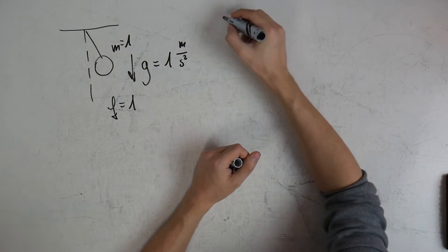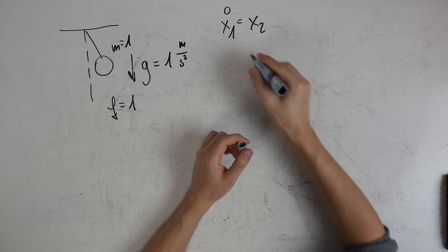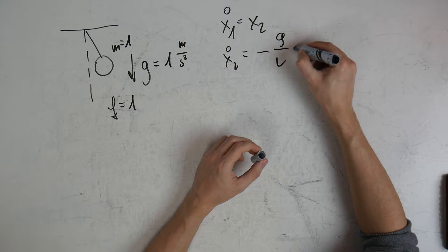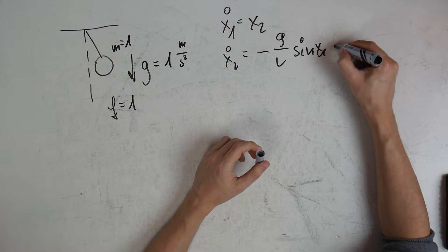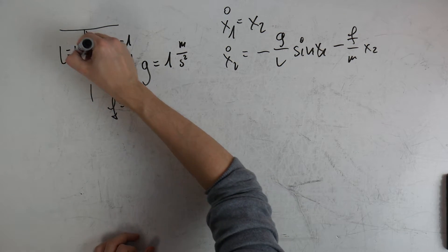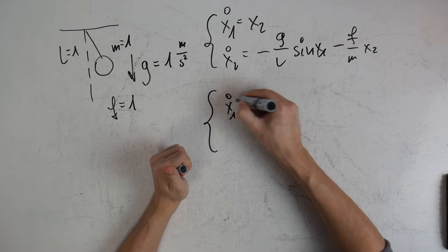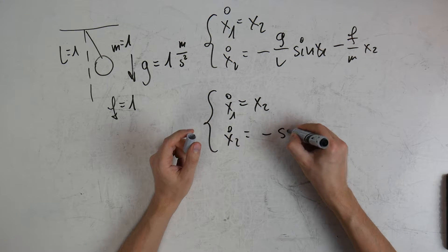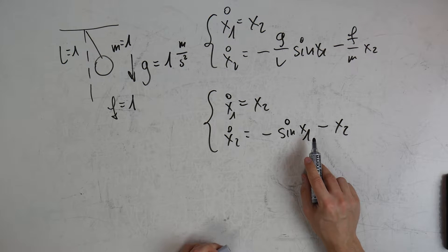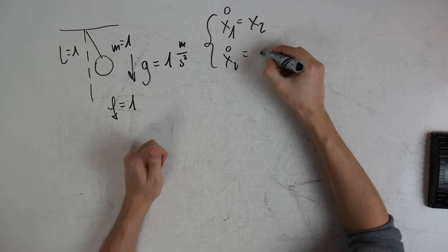For this system, the position is x1, its derivative is x2, and the derivative of x2 — the angular acceleration — gives us the equations. Due to the simplified parameters (length one, mass one, gravity one, friction one), the equations simplify to: ẋ1 = x2, ẋ2 = -sin(x1) - x2. The first term represents gravity influence and the second represents friction. Now I would like to prove that this system is stable.